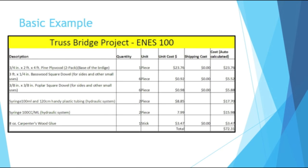Here's an example of a Bill of Materials I found online, and this example looks like they're building a bridge. You see on the left-hand column there, you have a description column that talks about each of the parts. So they've got plywood, they've got square dowels, they've got wood glue. That makes sense — if you're building a bridge, you're going to need those things.